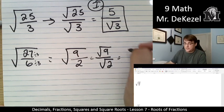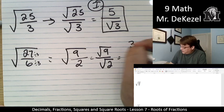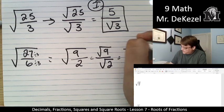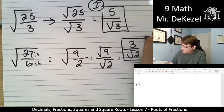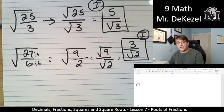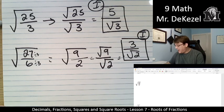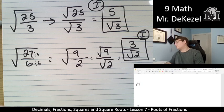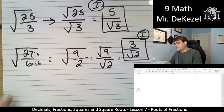So, that leaves us with 3 over the root of 2, which, again, is an irrational number. But, that is okay. That is simplified as much as it can. So, again, we have one last question. Yes, we do.